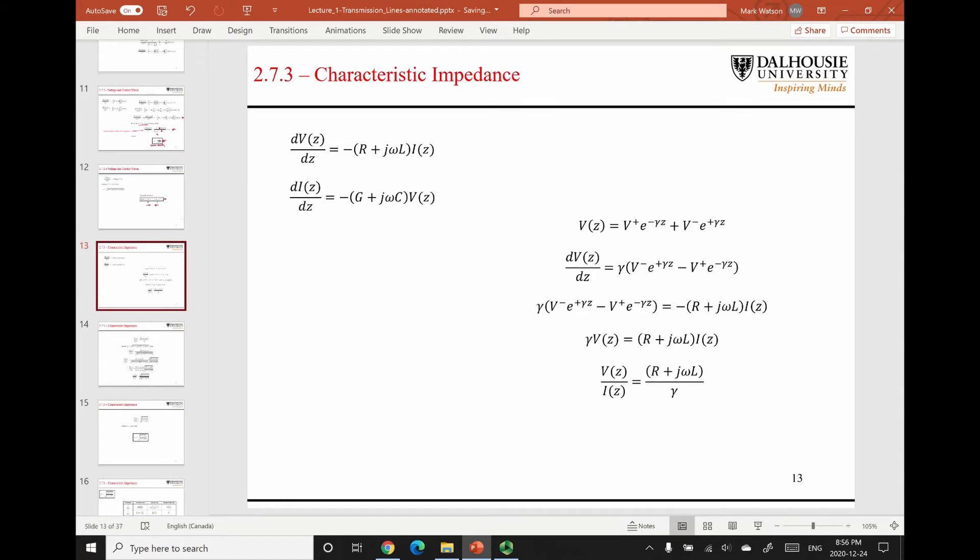So far we've talked about the wave nature of the voltage and current signals on transmission lines. Now I'm going to show you where this characteristic impedance comes from and how you can derive it from the solution to the wave equation.